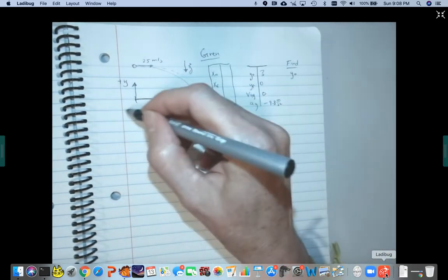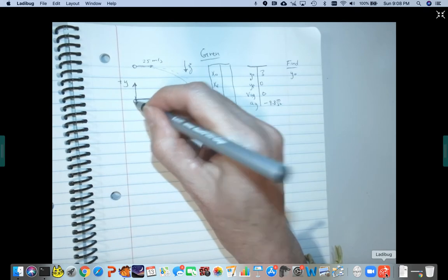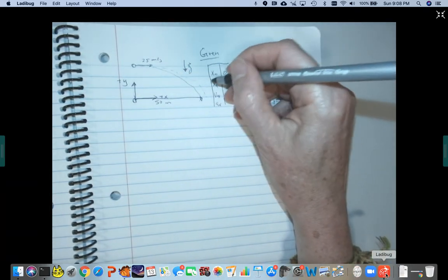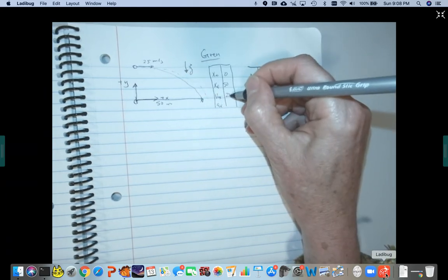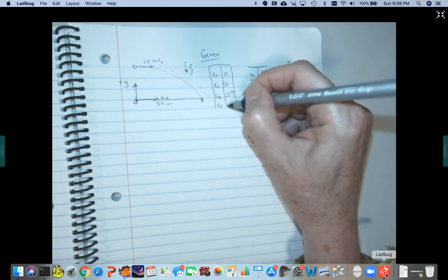Okay, so x initial, based on my coordinate system where my origin is right there, x initial is zero, x final is 50, v0x is 25 meters per second, and then ax will be zero.